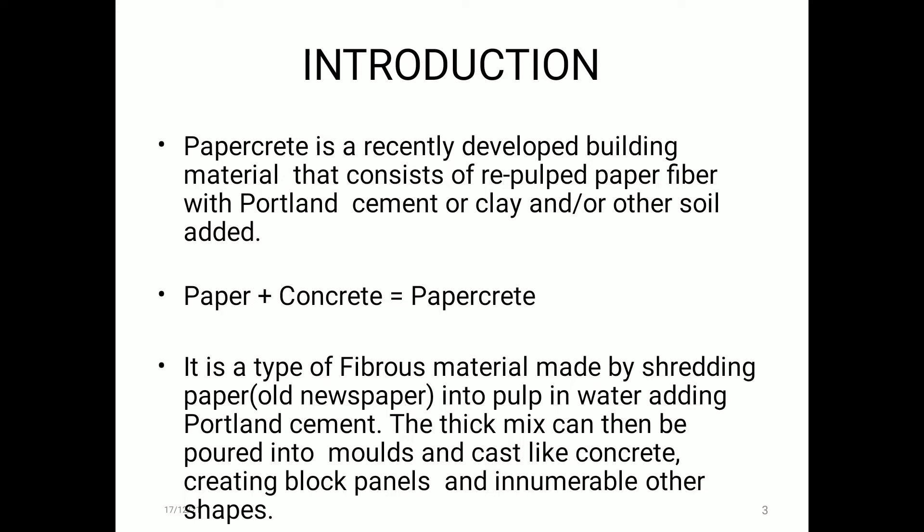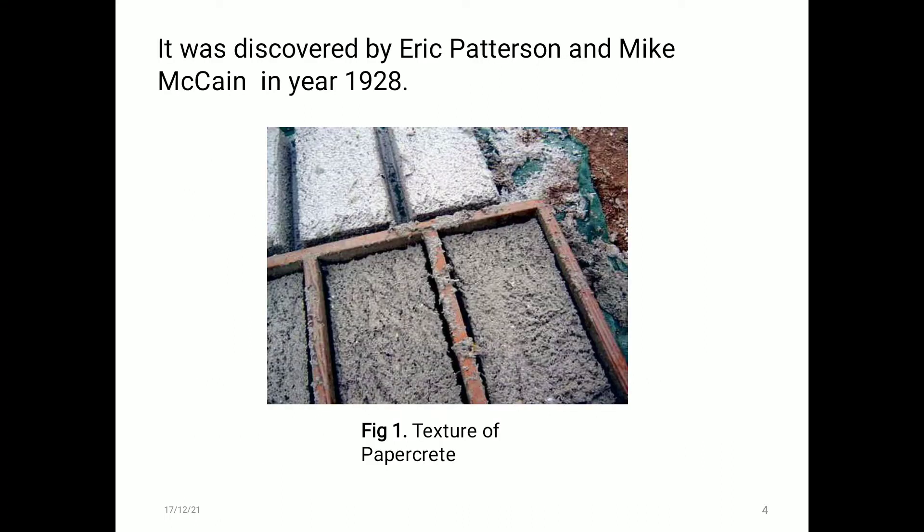Now coming to the introduction: Papercrete is a recently developed building material that consists of repurposed paper fiber with Portland cement, clay, or other soil added. Paper plus concrete — paper with concrete — makes Papercrete. It is a type of fibrous material made by shredding paper into pulp in water and adding Portland cement. The thick mix can then be poured into molds and cast like concrete, creating block panels and innumerable other shapes. Papercrete was discovered by Eric Patterson and Mike McCain in 1928.